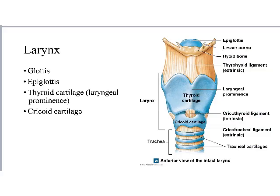Moving down from the pharynx — nasopharynx, oropharynx, laryngopharynx — brings us to the larynx, the anatomical name for the voice box, which contains the vocal cords. It's an enlarged area just before the trachea, composed of a few key components. The glottis is just the opening of the larynx — think of it like the pupil, which is really just empty space, not an actual structure. We give it a name because air has to pass through it, and the glottis can be opened or closed.